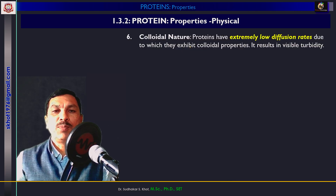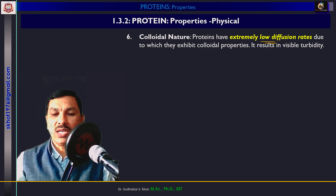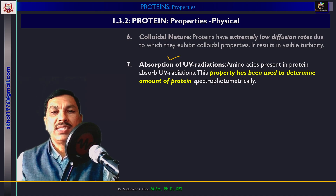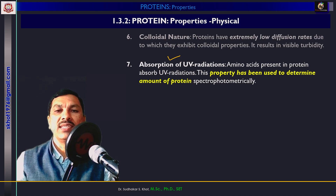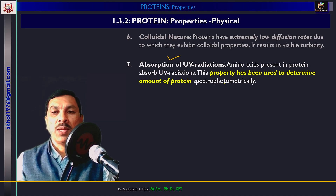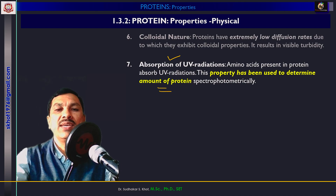The colloidal nature of protein can be seen when proteins are dissolved in water — they show a colloidal structure. Proteins also have the property of absorption of ultraviolet radiations. The amino acids present in the protein are responsible for this UV absorption. This property can be used for the quantitative estimation of proteins — absorption of UV is used for determination of the amount of protein in a given sample.